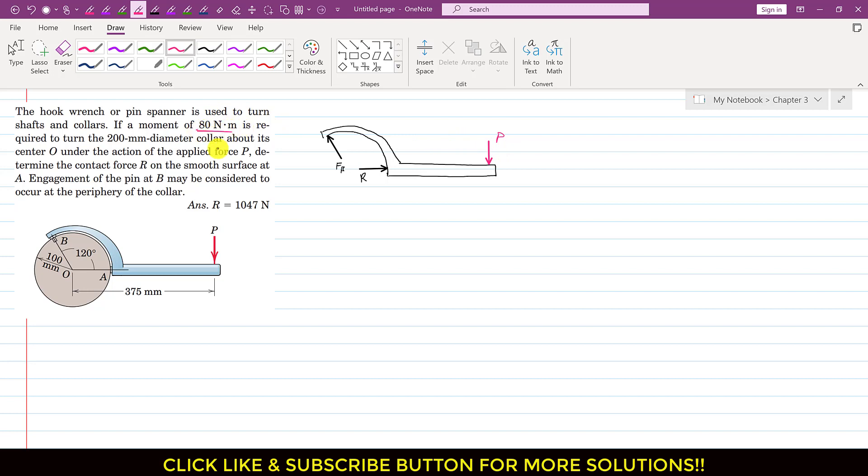So to find this R, we have to determine this P value. This P value can be determined by the moment. So it is said that 80 Newton meter torque is required to rotate this collar about point O. This means that the moment equals F times D. So F equals P times D, and this equals 80 Newton meter.